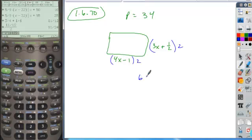So 2 times 3x is 6x, 2 times 1 half is 1, 2 times 4x is 8x, 2 times negative 1 is negative 2. That's the perimeter, so you set it equal to 34, and then you just solve from there.